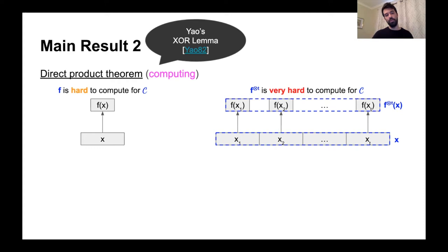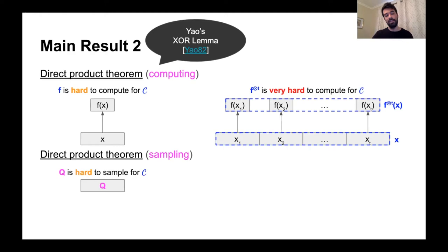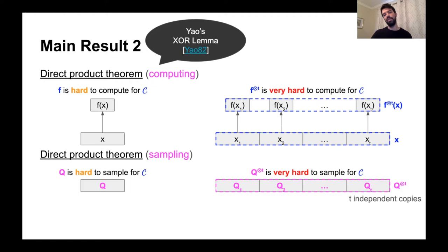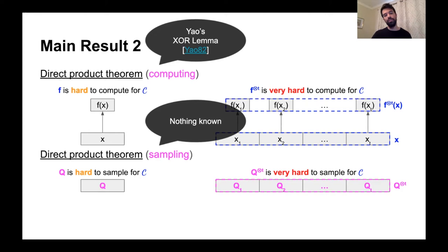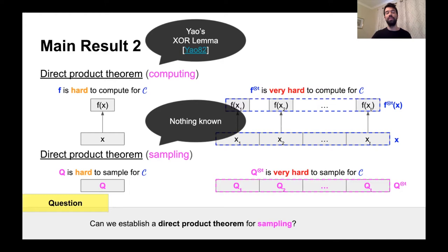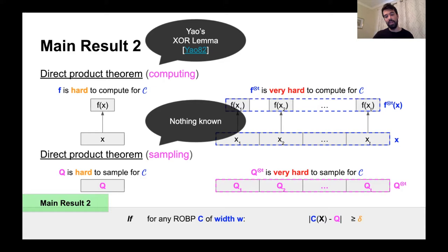In the context of sampling, a direct product theorem would say: suppose you have a distribution that is hard to sample for a class C. Then we'd like to build a distribution Q^⊗T that is very hard to sample for C. A good candidate is just taking T independent copies of Q and concatenating them together. However, while this is a natural question, there are actually no known direct product theorems for the task of sampling. Our second main result establishes such a theorem: if any width-W ROBP has output distribution delta-far from Q, then any width-W ROBP has output distribution exponentially far from Q^⊗T.